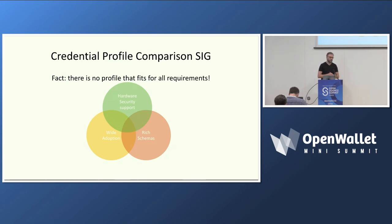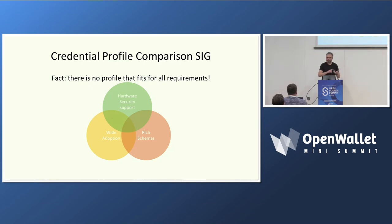What does that mean? Out there in the wild are a lot of different ways you can represent credentials. We have heard about those in the presentation. The Wallet Worker uses AnonCreds, Ping uses JOTS and SDJOTS, MOSSIP favors JSON-LD, and we heard about MDoc in the presentation by David, and so on.